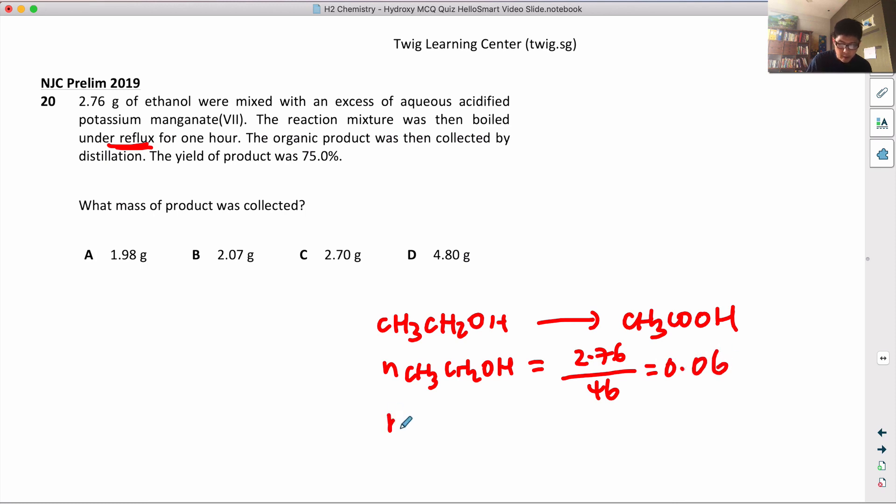So the number of moles of acid that should be produced would be 0.06 times 60. That gives you 3.6 grams.